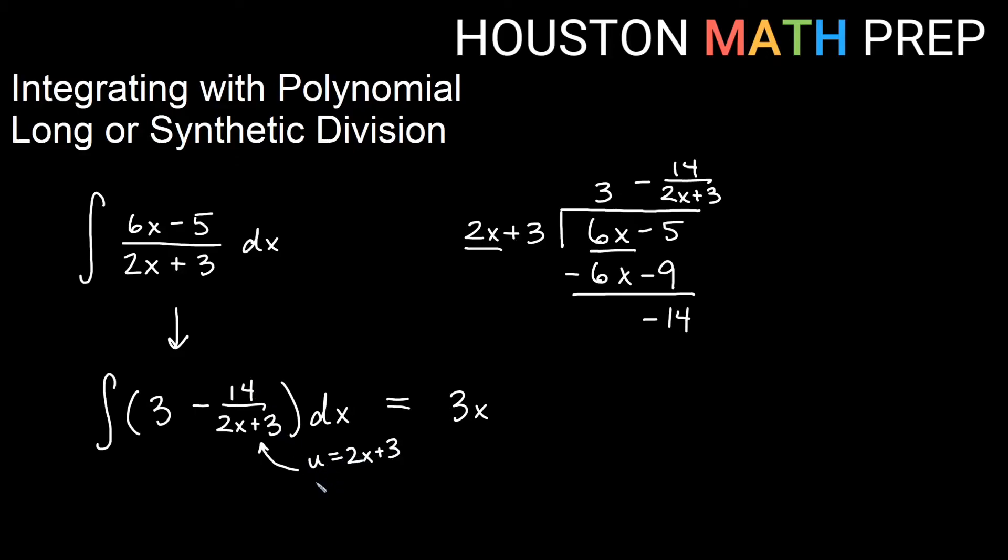We would have minus 7 integral of du over u. If we use our log rule for integration here, that would be 3x minus 7 ln absolute value of 2x plus 3 plus c for our answer on this one.